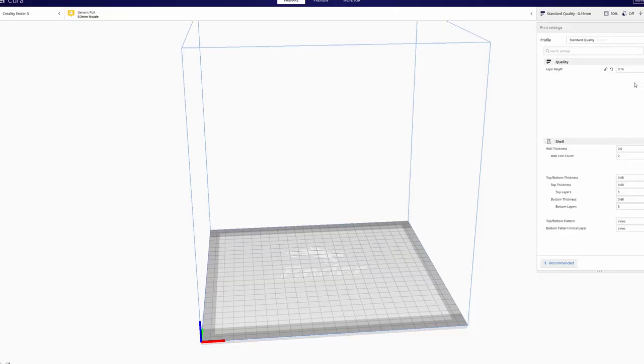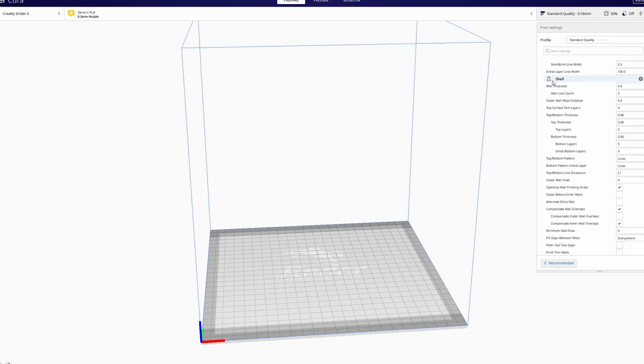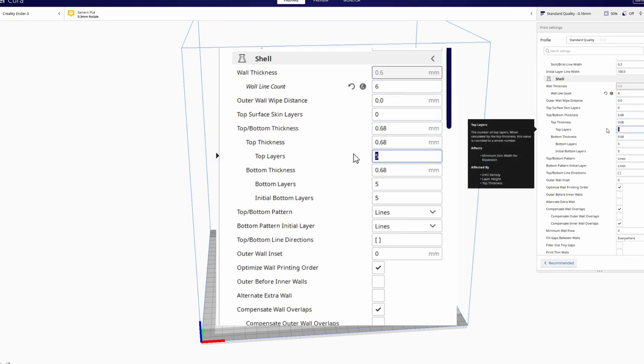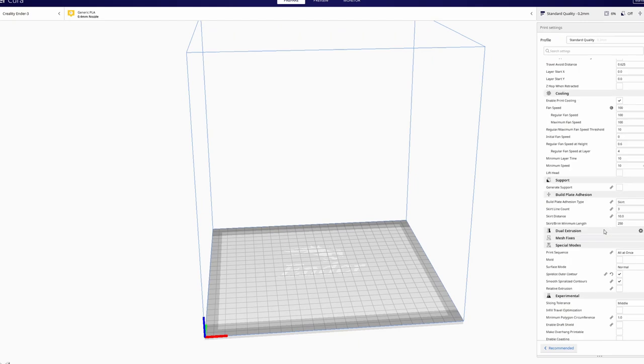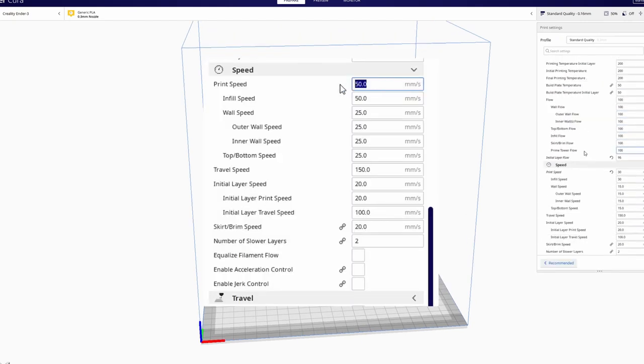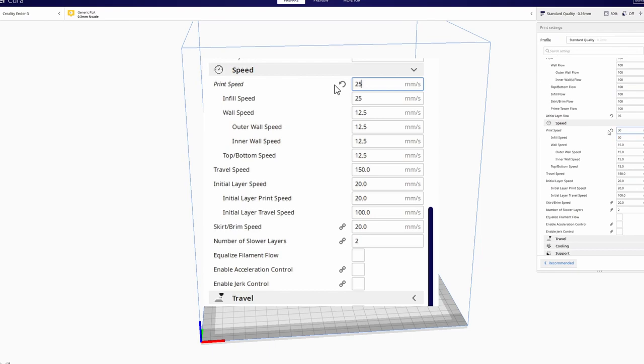To print something that will hold water reliably for long periods, I advise adding extra shell layers in your slicer, 6-7, which will provide redundancy against flaws. In addition to this, I advise printing slow, like 25-30mm per second, which should reduce the occurrence of these flaws.